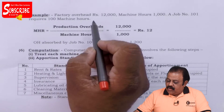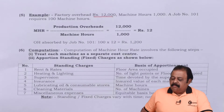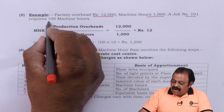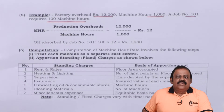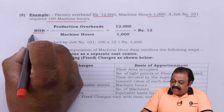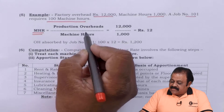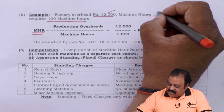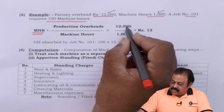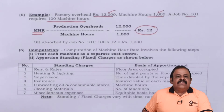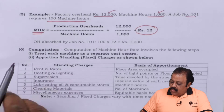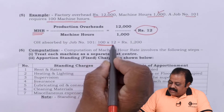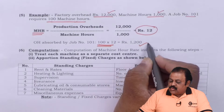Example: Factory overheads = ₹12,000; Machine hours = 1,000; Job number 101 requires 100 machine hours. First we calculate machine hour rate: Production Overheads ÷ Machine Hours = ₹12,000 ÷ 1,000 = ₹12 per machine hour. Overhead absorbed by Job 101 = 100 machine hours × ₹12 = ₹1,200.